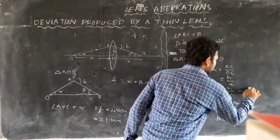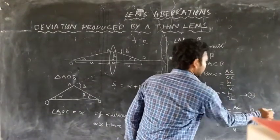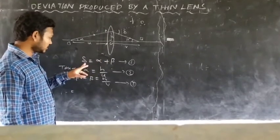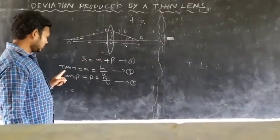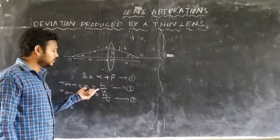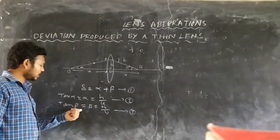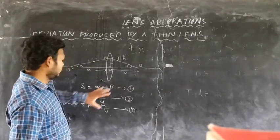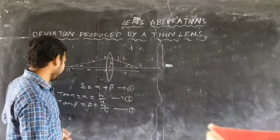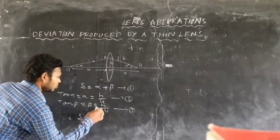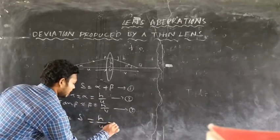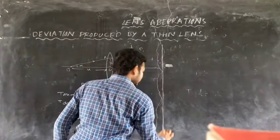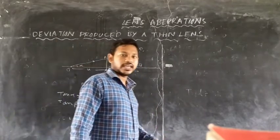Now we have three equations: delta = alpha + beta; alpha ≈ H/U; beta ≈ H/V. From these three equations, we can write: delta = H/U + H/V.